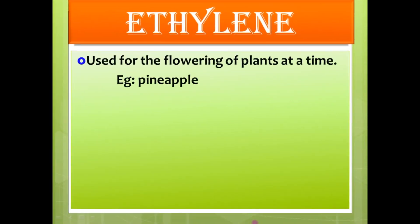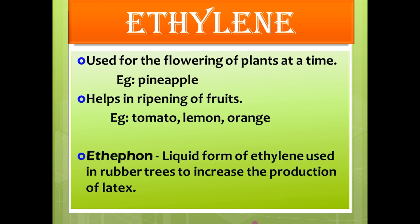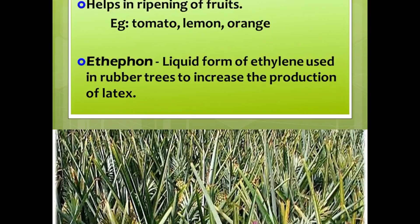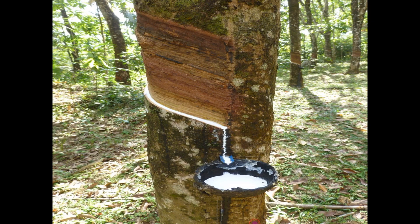The next one is ethylene. Ethylene is used for flowering of plants at the same time — for example, pineapple — so that farmers can do the harvest at the same time. It also helps in the ripening of fruits, for example lemon, orange, tomato, etc. An artificial ethylene known as ethephon is used in rubber trees to increase the production of latex. Usually ethylene is a gaseous plant hormone, but ethephon is an artificially synthesized liquid form of ethylene which is used in rubber trees to increase the production of latex. In pineapple farms and rubber plantations, we widely use artificial ethylene.